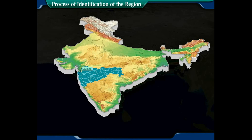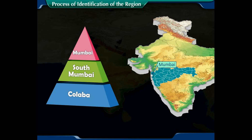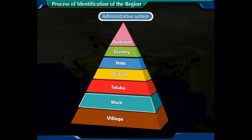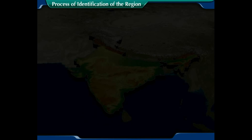Did you know that even a region has hierarchy? The word hierarchy means more than one level. In regional hierarchy, at each higher level the region is larger, more complex, but generalized. For example, in the hierarchy of administrative regions: the village is the smallest unit at the base, followed by a block, then the taluka, then the district, then the state, then the country, and finally the continent at the peak as the largest and most complex.